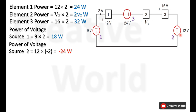Moving towards voltage source 2. Voltage across this source is 12 volts and current through it is 2 amperes. This current is entering from the negative terminal, so it will be taken with minus sign. The power of source 2 will be 12 multiplied by minus 2, which is minus 24 watts. Because of the minus sign, this power is being supplied by voltage source 2.